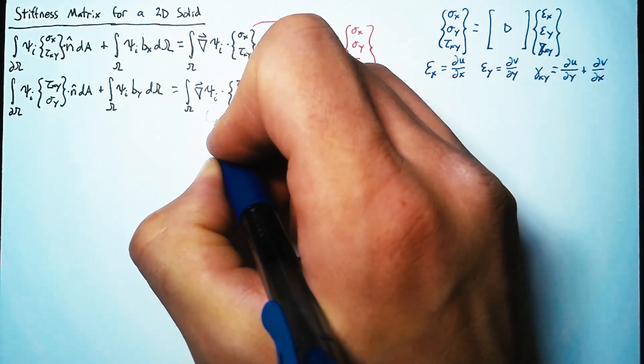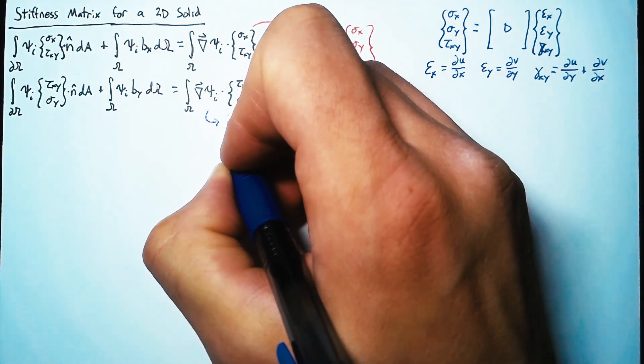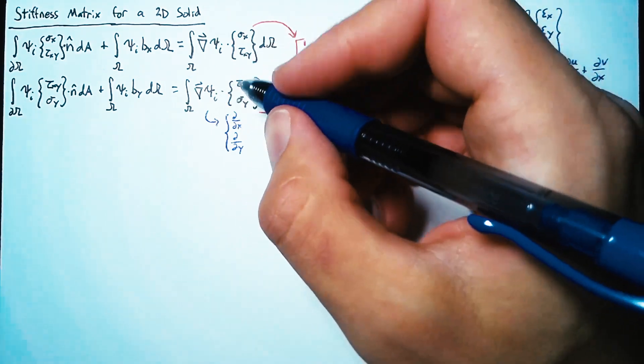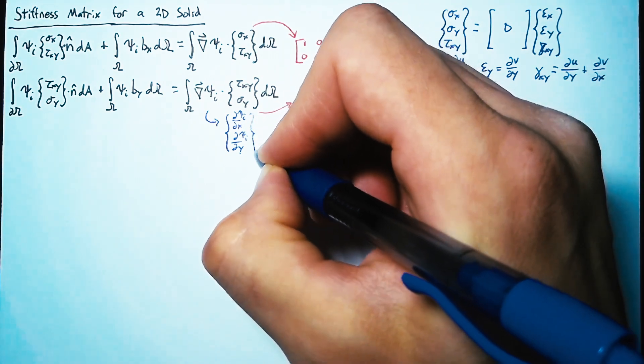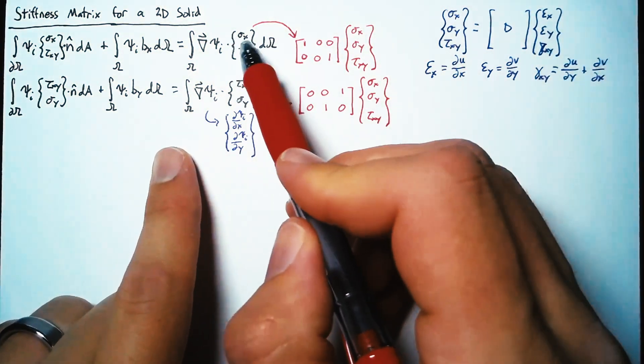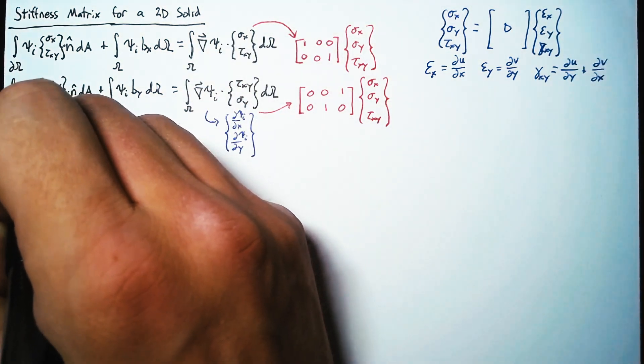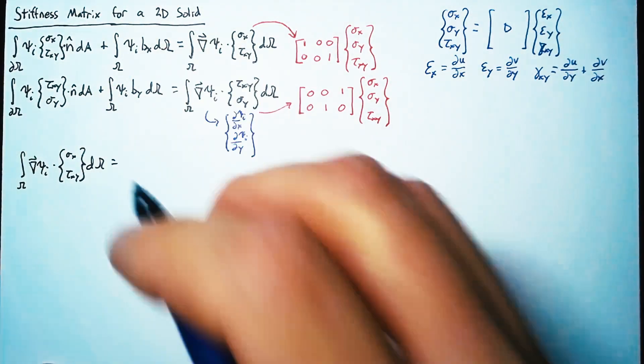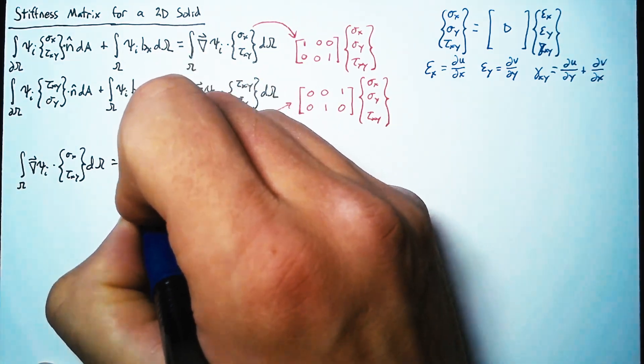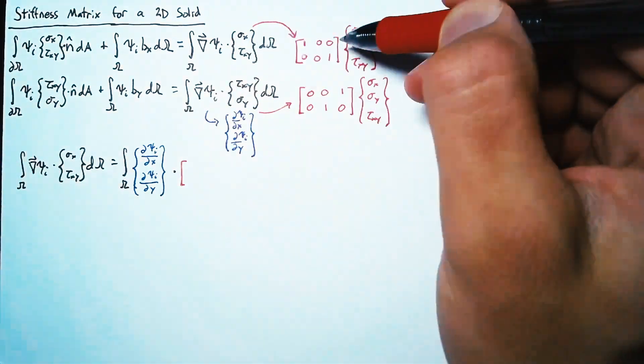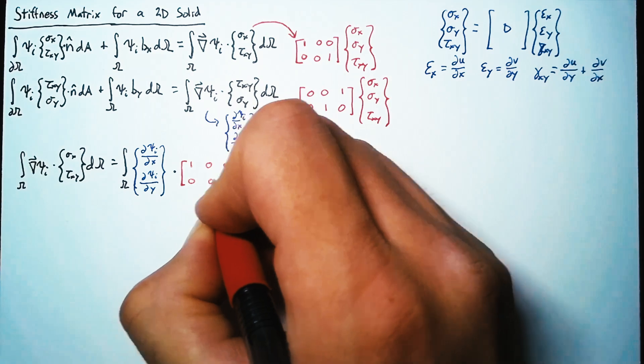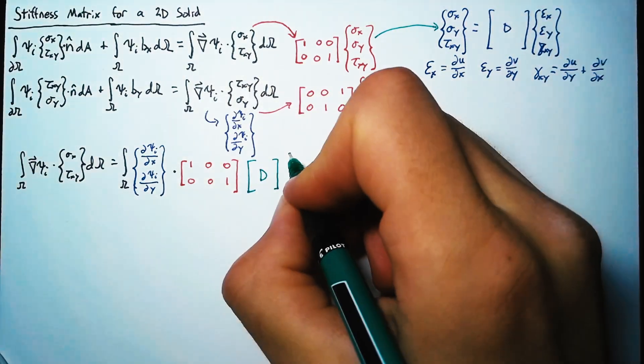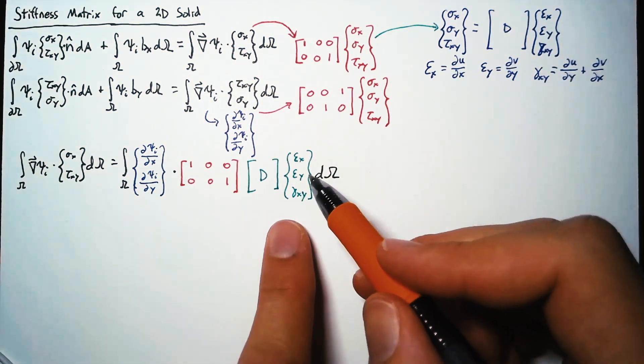The second thing we can do is expand out the gradient vector, which is d by dx and d by dy multiplied by psi i. So this is d psi i dx and d psi i dy just in vector form. If we want to expand this piece out, we can say that the integral of omega of that gradient of psi i dotted with sigma x tau xy is equal to the integral of this gradient vector dotted with, and let's use just our x equation to start. This will be 1, 0, 0, 0, 0, 1. Instead of copying down these again, let's recall that these can just be written as our constitutive matrix multiplied by these strains.